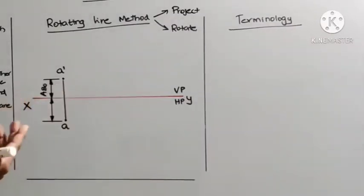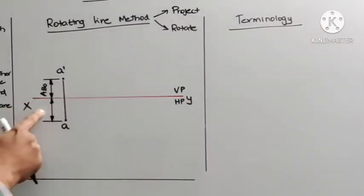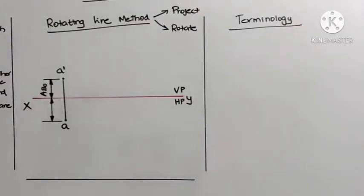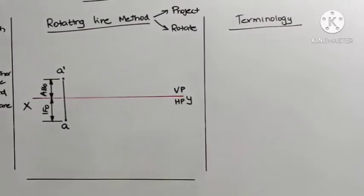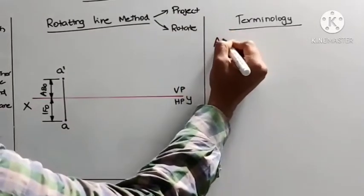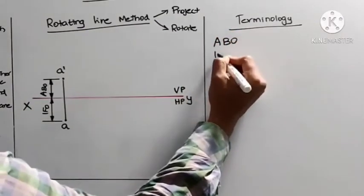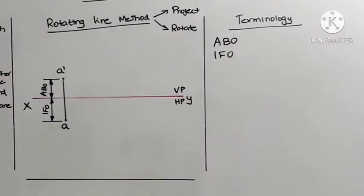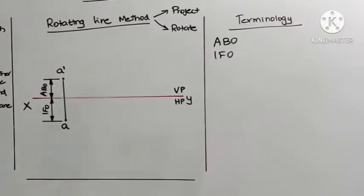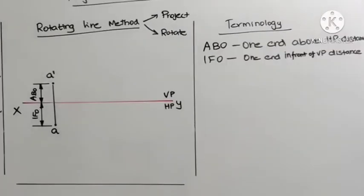This A-B-O distance is nothing but 'above HP', and this distance is 'in front of VP'. So I am going to write: A.B.O. (above) and I.F.O. (in front of). This refers to one end — above the horizontal plane and in front of the vertical plane.